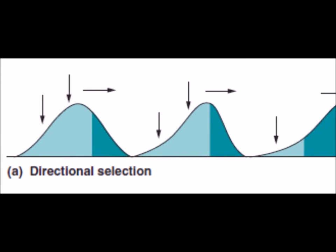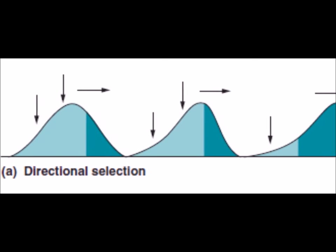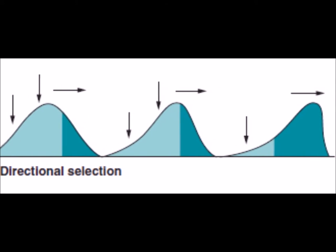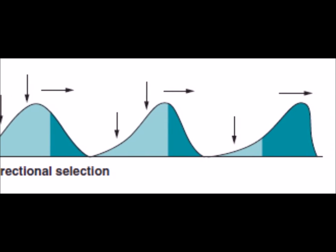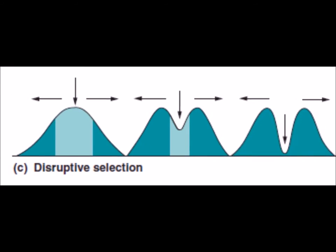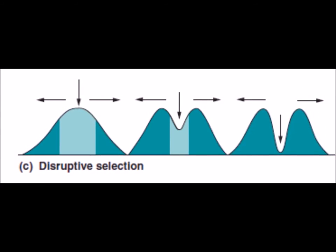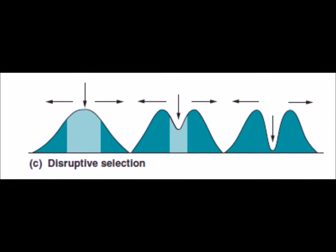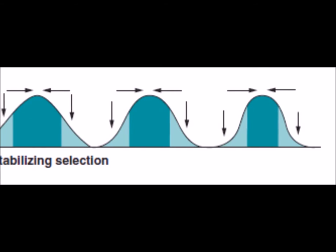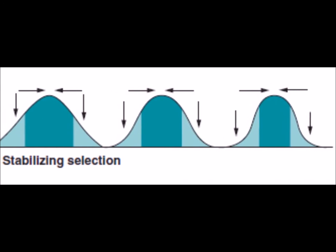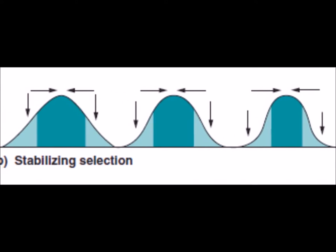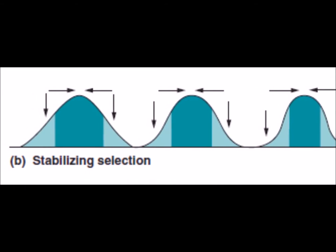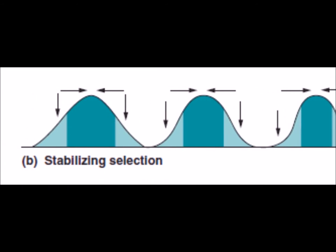This is a very good example of directional selection, in which the mean value of a trait is shifted toward one extreme over another. Another type of selection, known as disruptive selection, occurs when members of a population are subject to different selection pressures. In other cases, natural selection may favor individuals near the population mean at the expense of the two extremes — this is referred to as stabilizing selection.